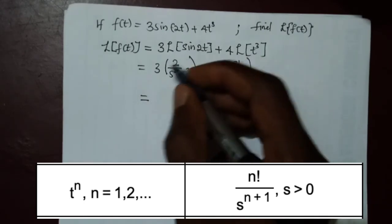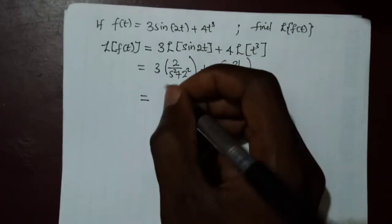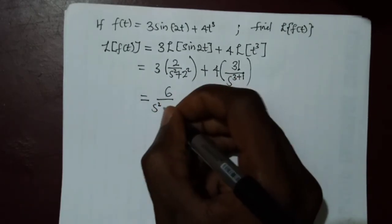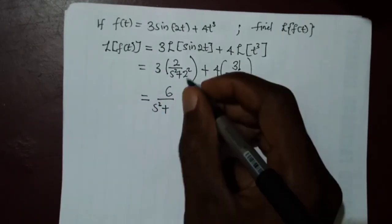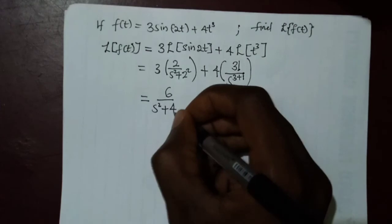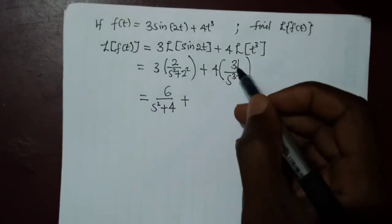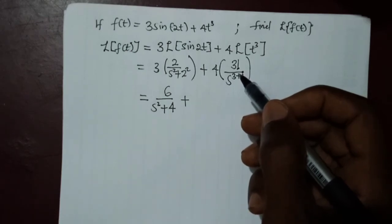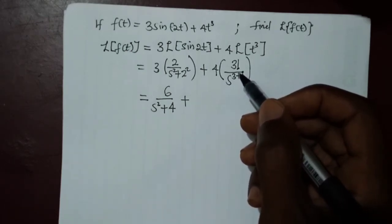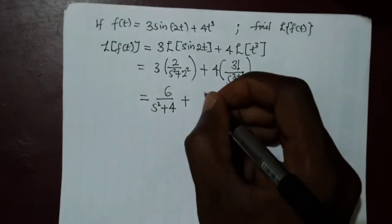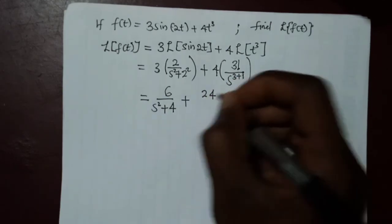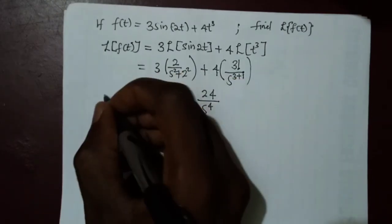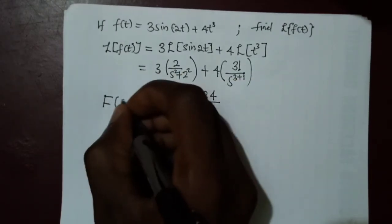Simplifying: 3 × 2 = 6 divided by s² + 4, plus 3! = 3×2×1 = 6 and 6×4 = 24, so we have 24/s⁴. Therefore F(s) = 6/(s²+4) + 24/s⁴. This is the new function of s.